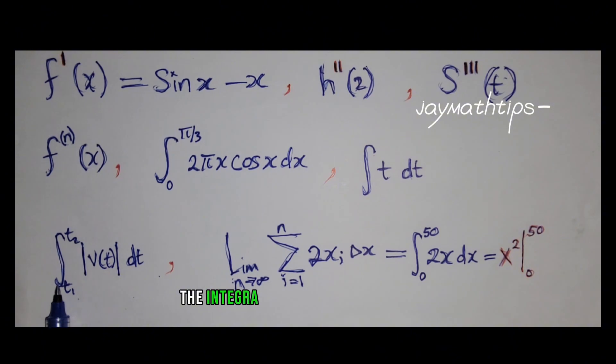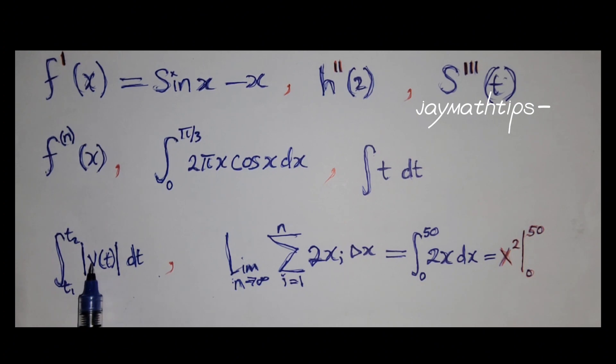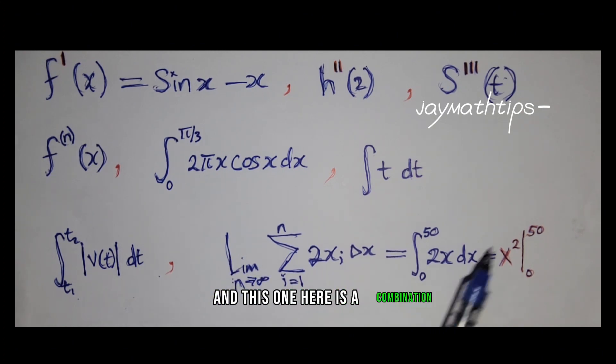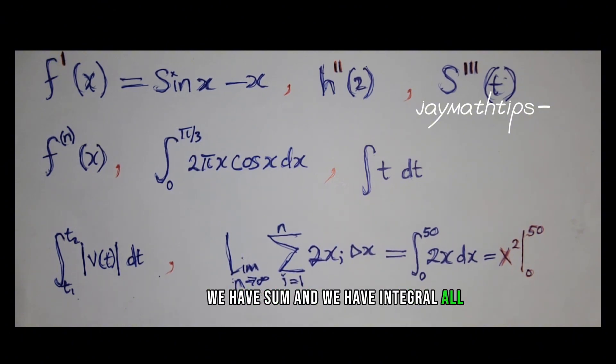The integral from t1 to t2 of the absolute value of v of t dt. And this one here is the combination of so many: we have limits here, we have sums, and we have integrals all joined together.